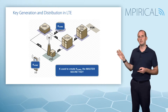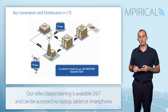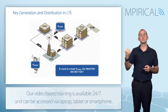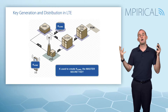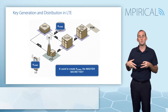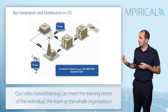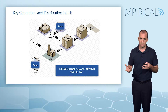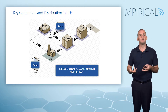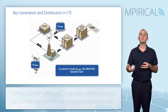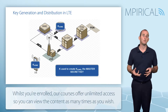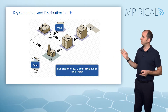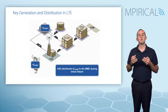From that secret key we generate a master key called KASME — Key Access Security Management Entity. Initially, as part of the attach procedure, KASME is first generated at the HSS: the HSS uses the secret key, generates a random number, and passes them through the appropriate security algorithms. In order for the mobile to generate KASME, it uses exactly the same algorithms and secret key, but must be supplied with that random number by the network, which is delivered in the authentication challenge at the NAS level.